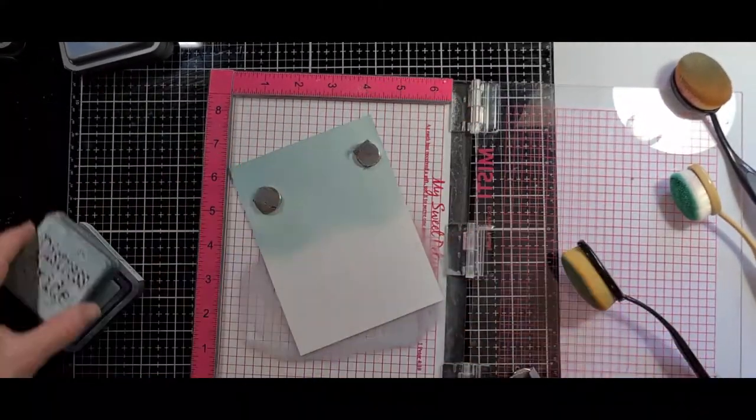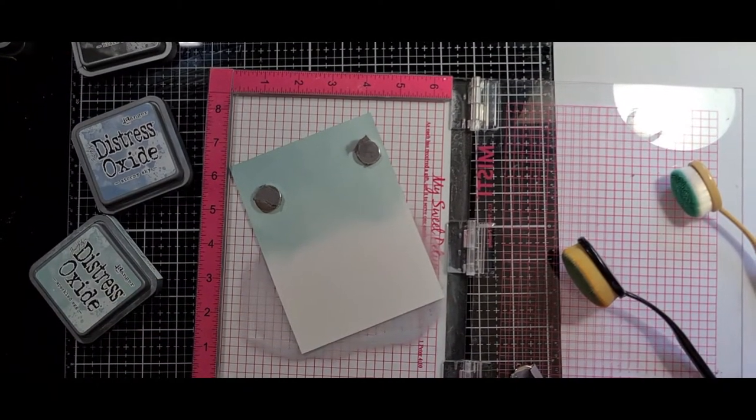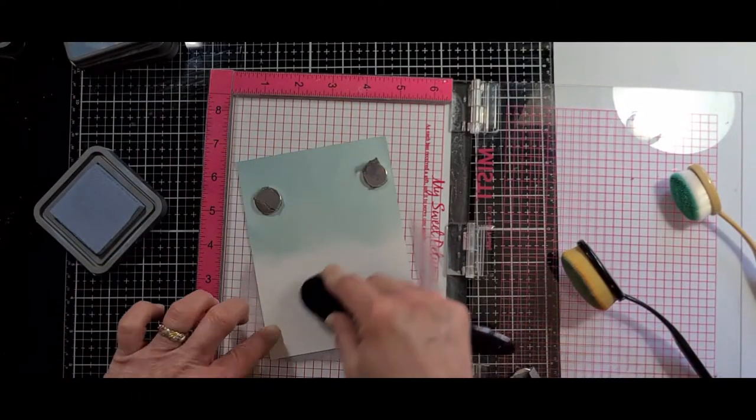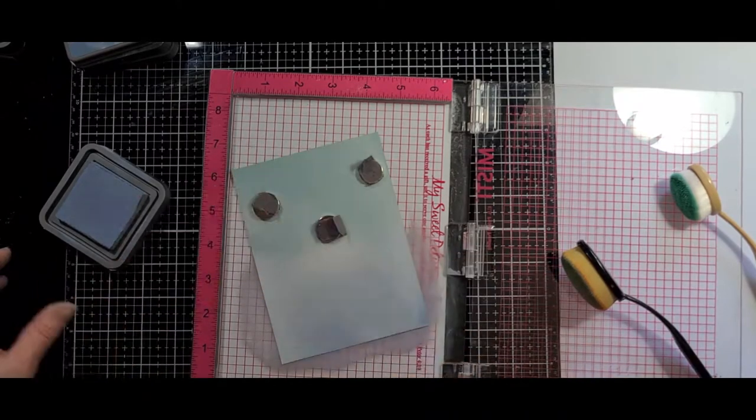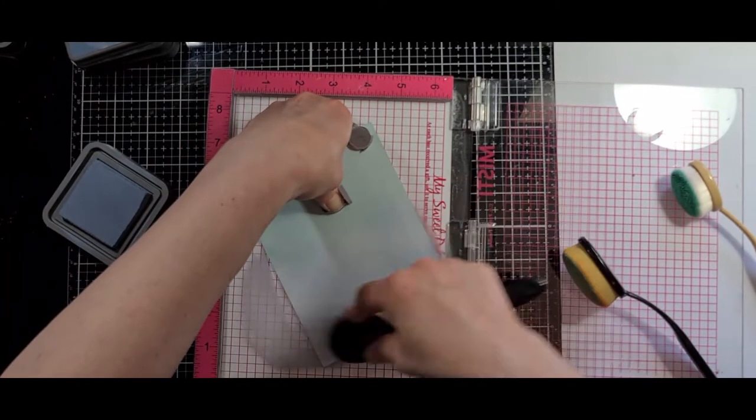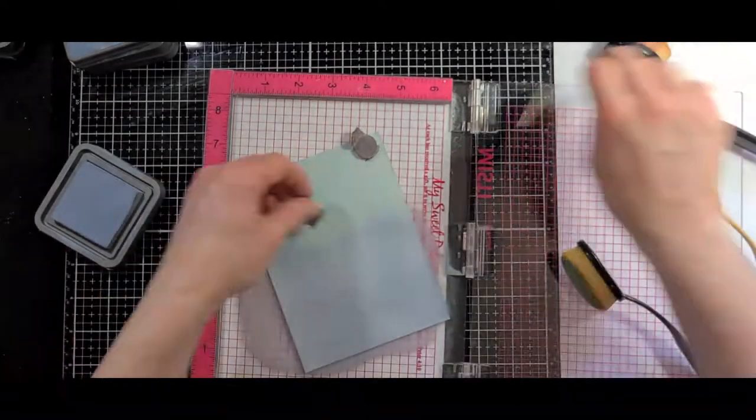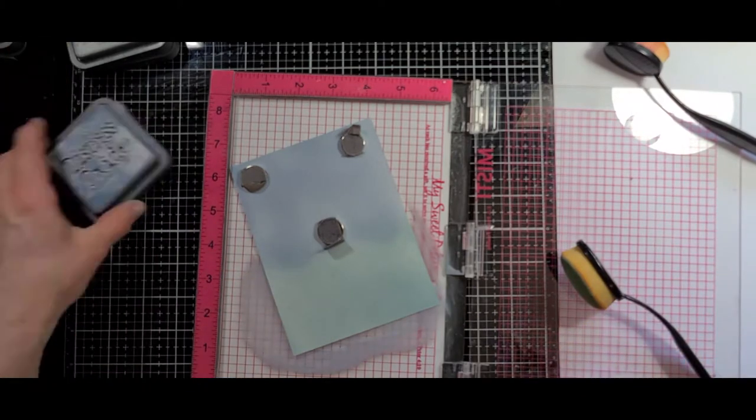The paper did still move around a little bit, but significantly less than it normally does with the post-its. But if you do use this, just make sure that you do wipe off the magnets in between going from one color to the next so you don't transfer any of the dark ink onto a lighter area or vice versa. But it actually did work out really well.